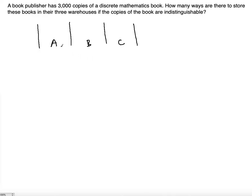In this case, elements are the warehouses, so n is equal to 3. And the r combinations is gonna be 3,000, so r is going to be equal to 3,000 because you're gonna place 3,000 books and distribute them however you want among the three warehouses.